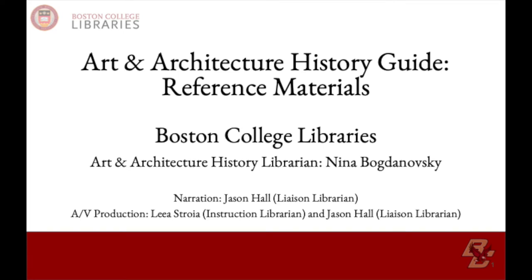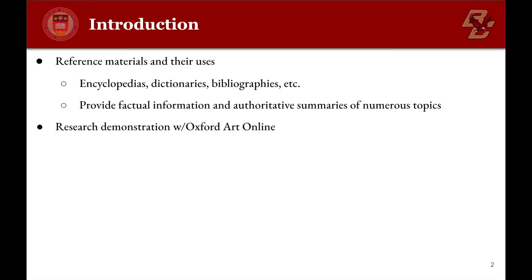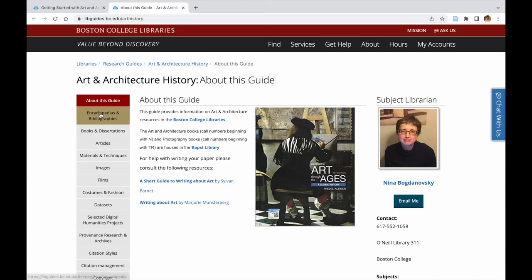Welcome to the next video in the series on conducting art and architecture research. In this video, we will go over some useful reference materials. Reference works such as encyclopedias or dictionaries are a great place to start with many research topics. They provide accurate factual information and authoritative summaries of topics.